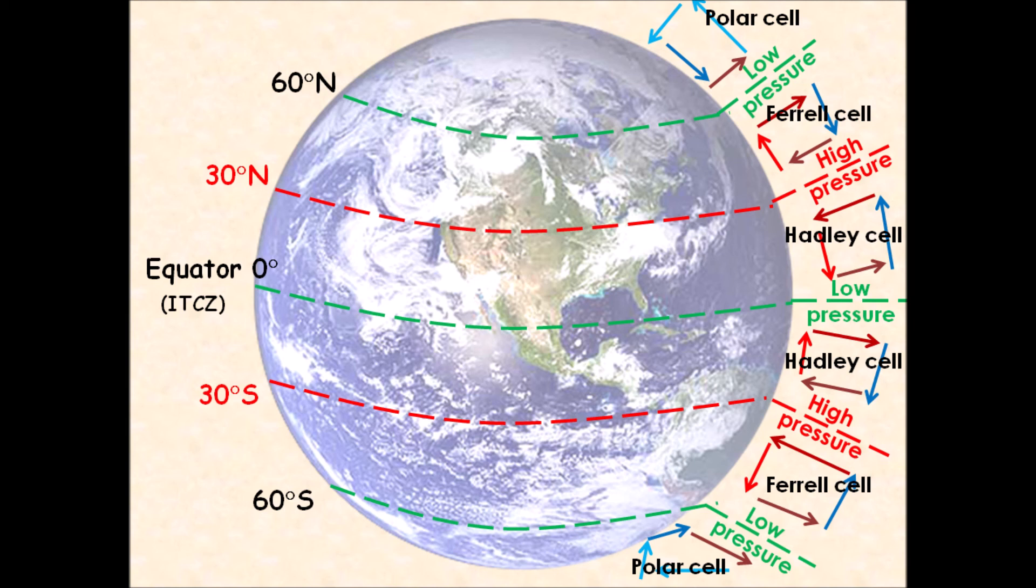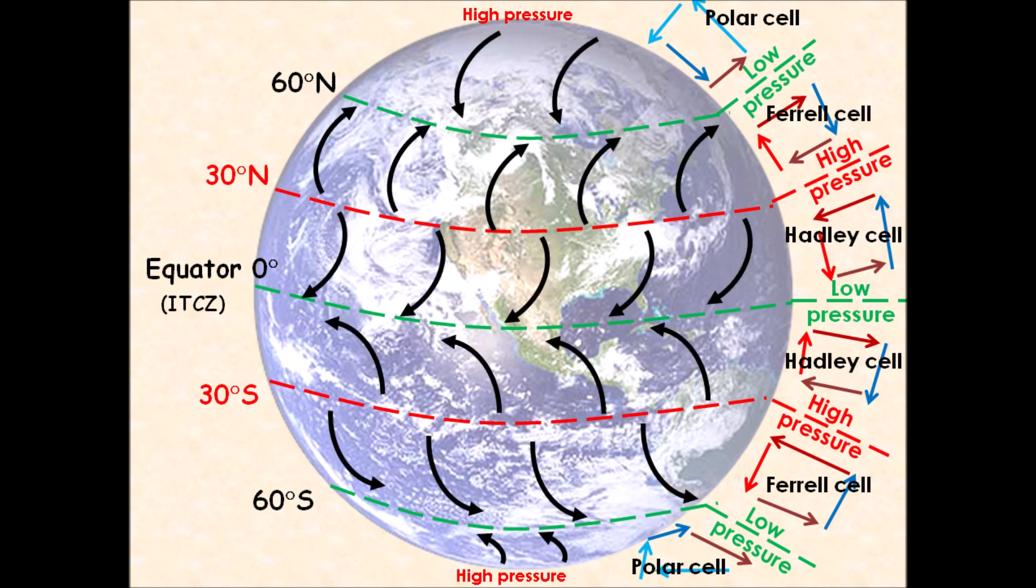That leads us to our third and final convection cell, which is known as the polar cell. These particular cells will move air between the 60 degrees north and south latitude lines and the north and south poles. At the north and south poles, the air again is sinking, causing an area of high pressure. Remember, high pressure is when the air is descending, coming down towards the earth. And again, that high pressure creates clear skies and dry conditions.